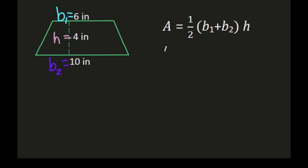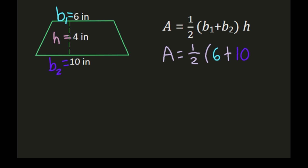So our height is four inches. Now we can go to the formula and begin substituting these values. Area equals one-half times base one — we labeled base one as six inches — so we'll have one-half times, in parentheses, six plus our base two, which we labeled as ten inches. So six plus ten in the parentheses, times our height of four inches. Now we solve what's inside the parentheses first, giving us one-half times sixteen times four.